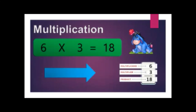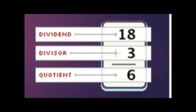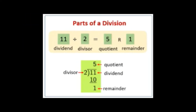We will proceed to the last operation: division. The parts of division — we have dividend that is 18, divisor that is number 3, and the answer 6 we call quotient. Another example with a remainder: 11 is the dividend, 2 is the divisor, 5 is the quotient, and 1 is the remainder.